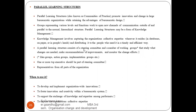A parallel learning structure consists of a steering committee and a number of working groups that study what changes are needed, make recommendations for improvement, and monitor the change efforts. It includes idea groups, action groups, and implementation groups. One or more top-level people should be part of the steering committee, and representatives from all parts of the organization — all departments and all levels — need to be present. The steering committee works on recommendations for where changes can happen and how improvement can be done.